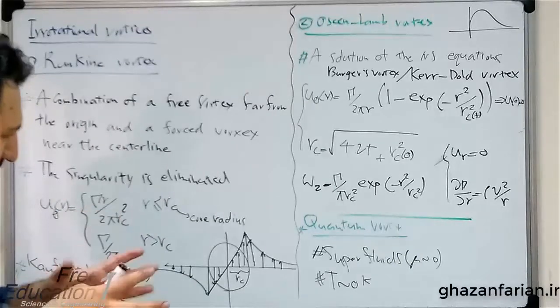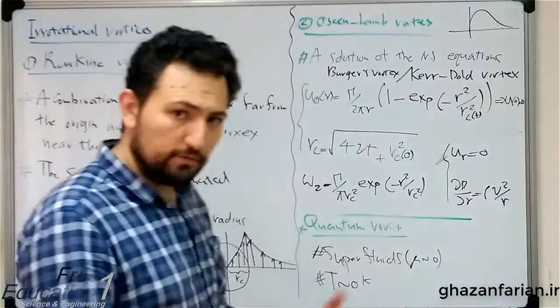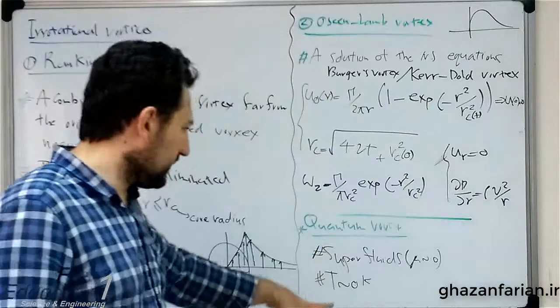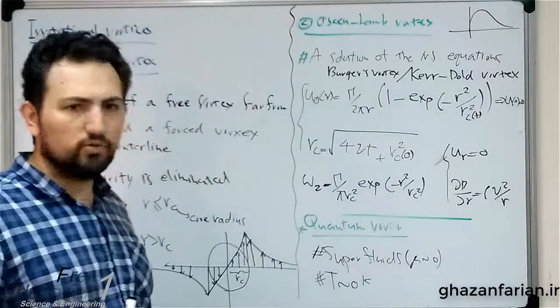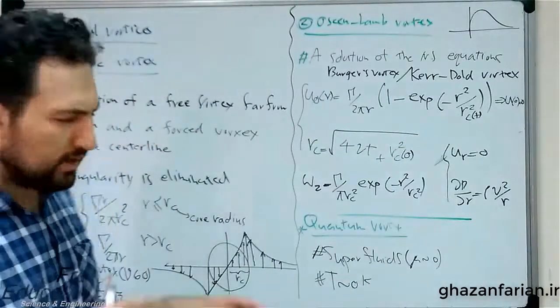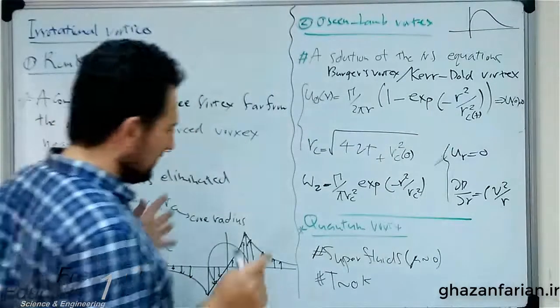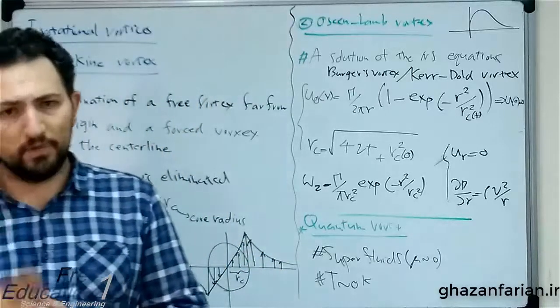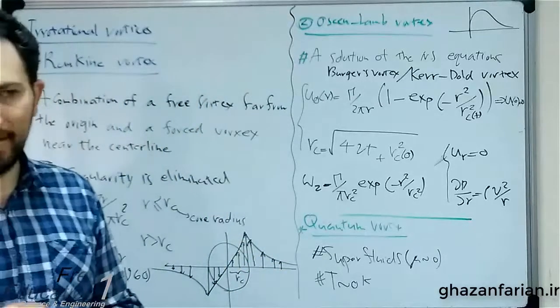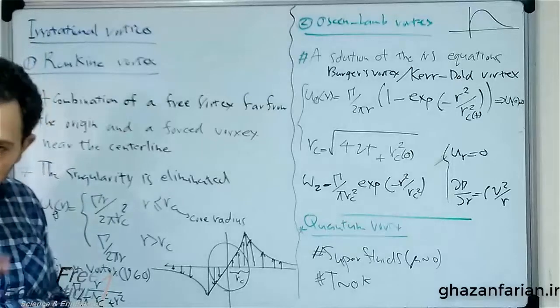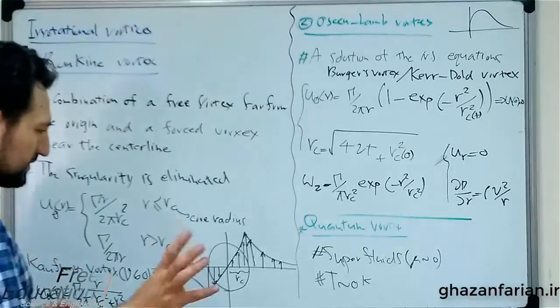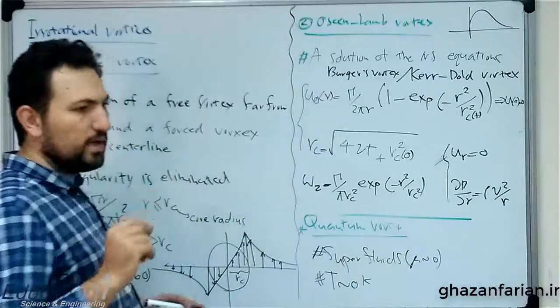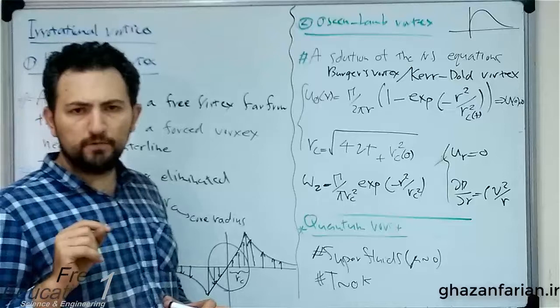But the third class of vortices, which is totally different and has different characteristics, is the quantum vortex. This is something related to quantum fluid mechanics, which is out of the scope of this lecture. Maybe I'll record some videos in the future about quantum fluid mechanics and its preliminary concepts. Here, let's just mention that the quantum vortex is something which appears in superfluids.